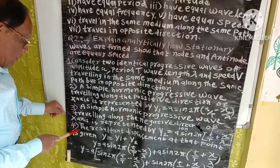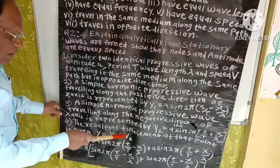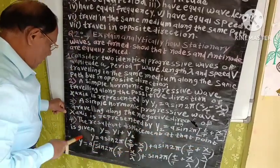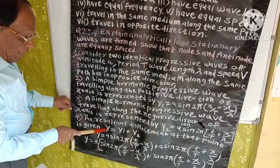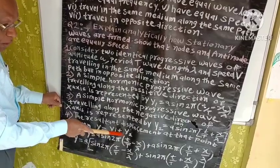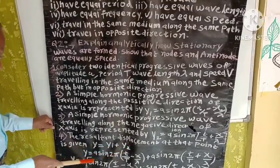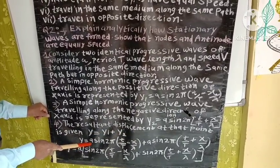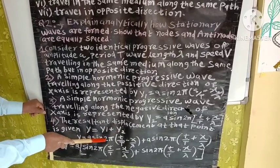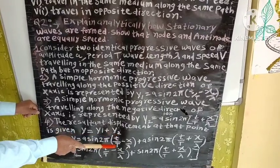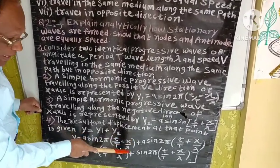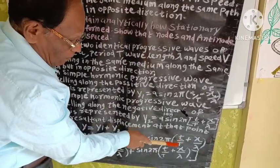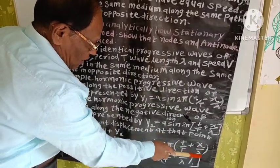Fourth point: The resultant displacement at that point is given by Y = Y1 + Y2. Putting in the values, we get Y = A sin 2π (t/T − x/λ) + A sin 2π (t/T + x/λ).